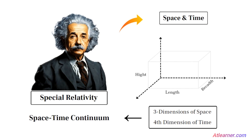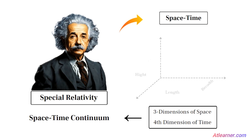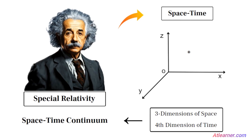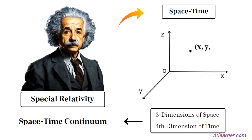It is used to describe the position and motion of objects in the universe. According to this theory, space and time are not separate and independent entities but part of a unified entity called space-time. This means that an event in the universe can be described by four coordinates: three spatial coordinates — x, y, z — and one temporal coordinate, t.